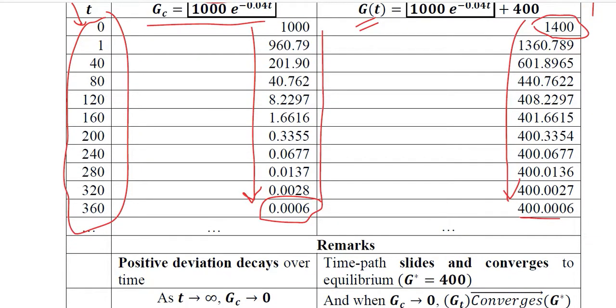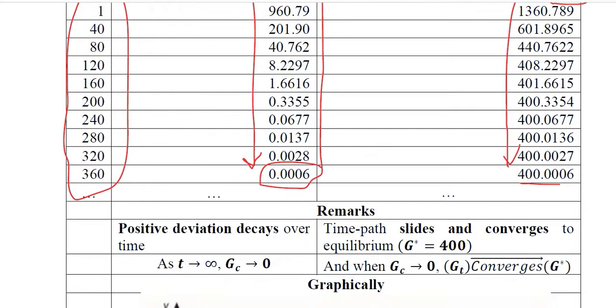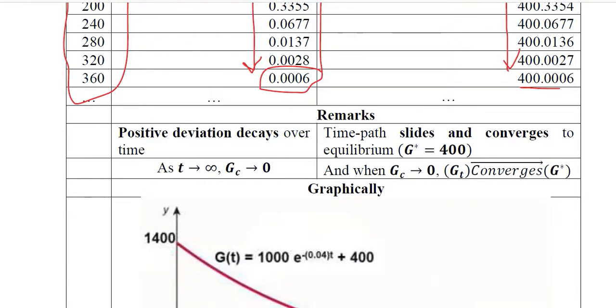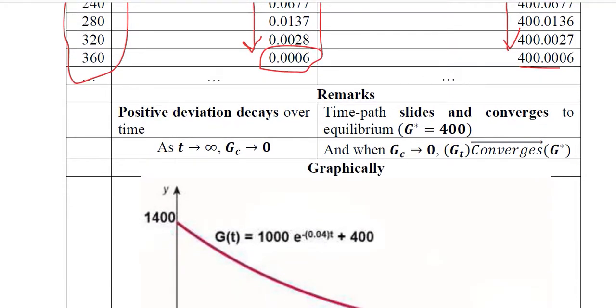Now this remark part is here, and in this we can say that as the time goes on, the complementary part of the function fades to 0 and G* is equal to 400. This was the equilibrium, so as the complementary part is fading away, the time path is now converging to the equilibrium which is 400.